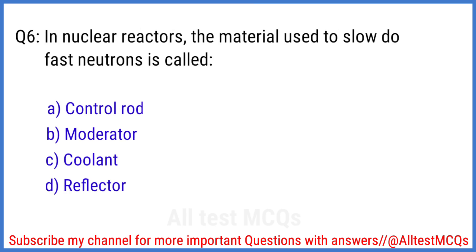Q6. In nuclear reactors, the material used to slow down fast neutrons is called? The right answer is option B. Moderator.